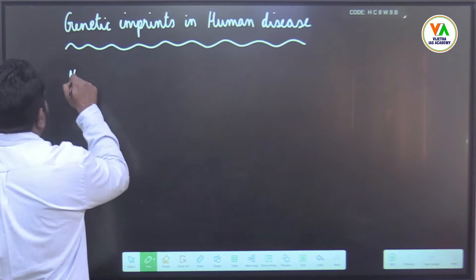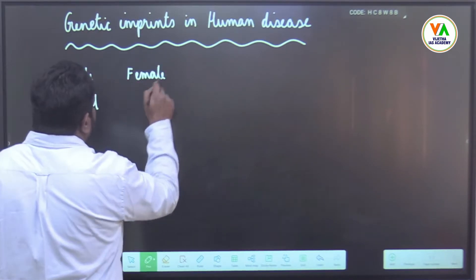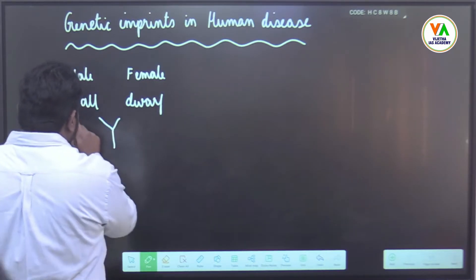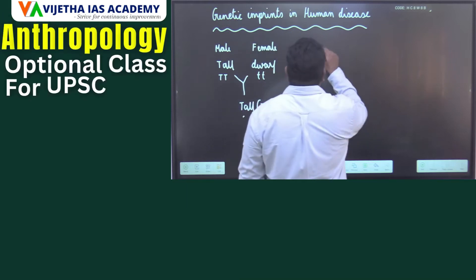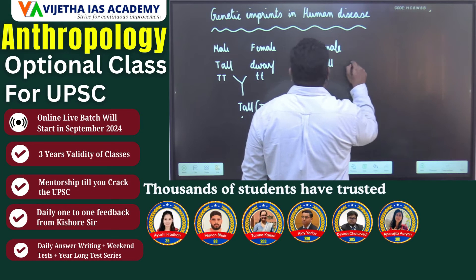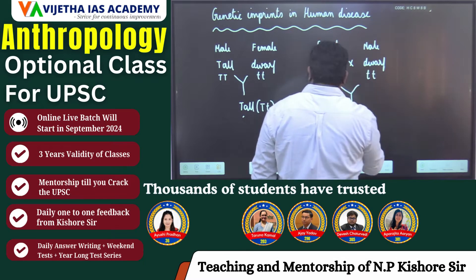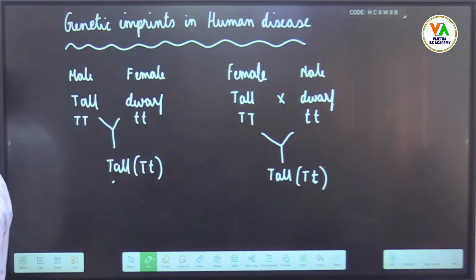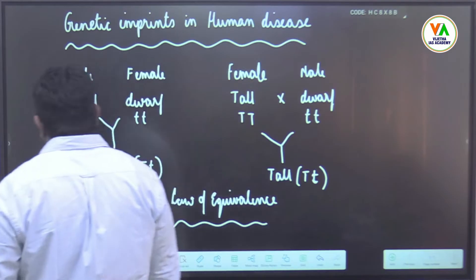If a male tall plant is crossed with a dwarf female plant, we get a tall plant. It does not make any difference whether the female plant is tall or the male plant is tall — it is inevitably expressed in the next generation. This is known as the Law of Equivalence. Genomic imprints, or genetic imprints, do not follow this law.